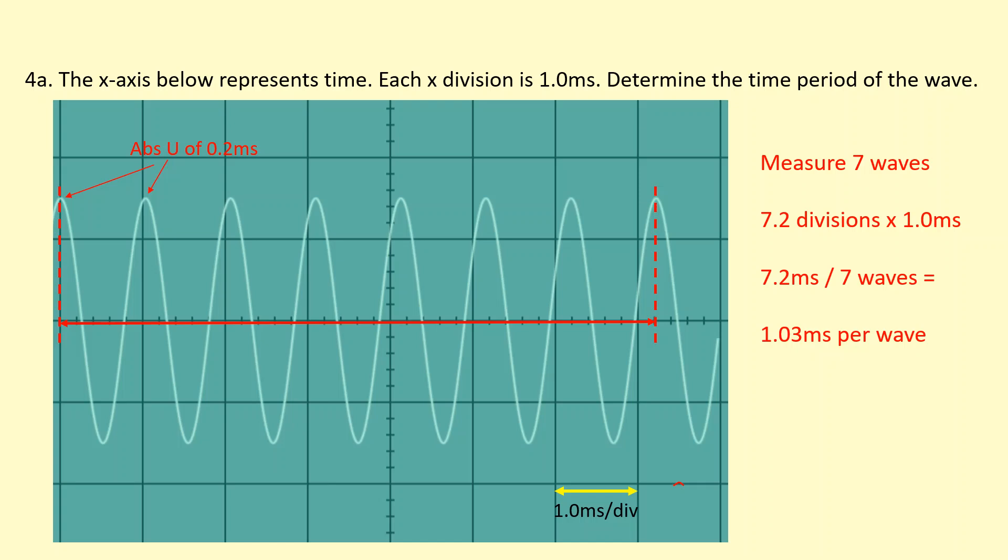So I'm getting 1.03 milliseconds per wave. This reading here would have a much smaller percentage uncertainty than if I just measured the length of one wave.